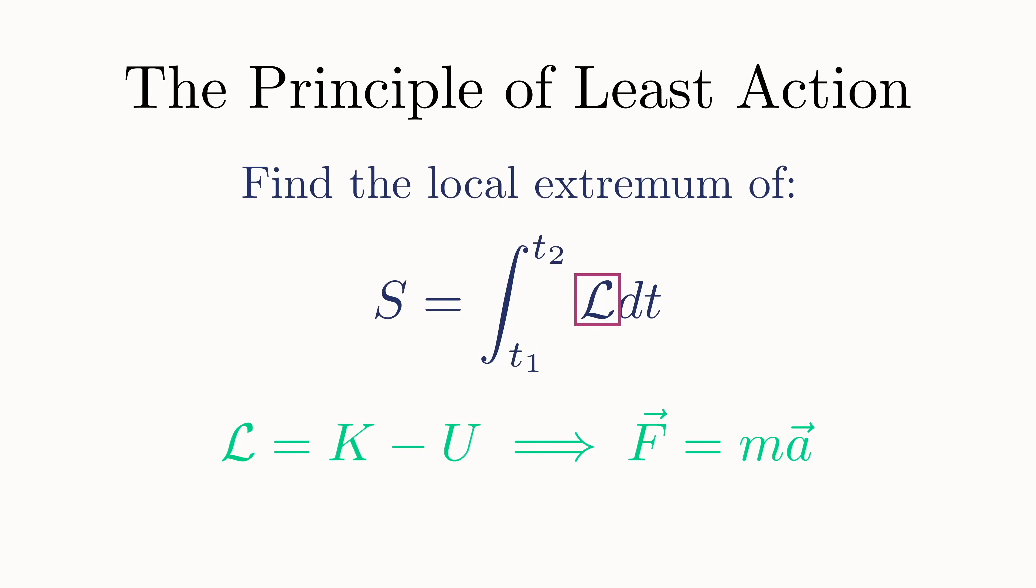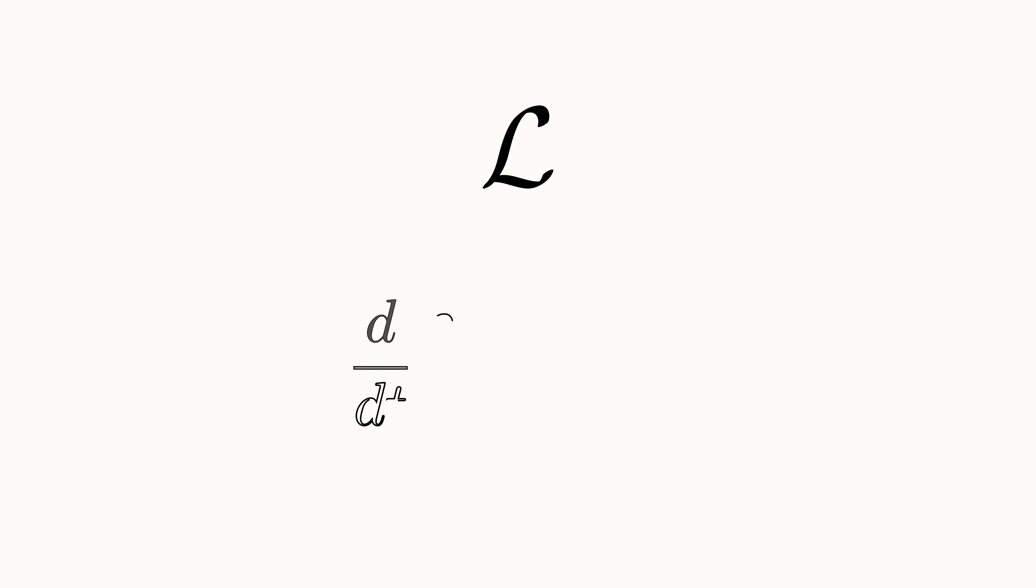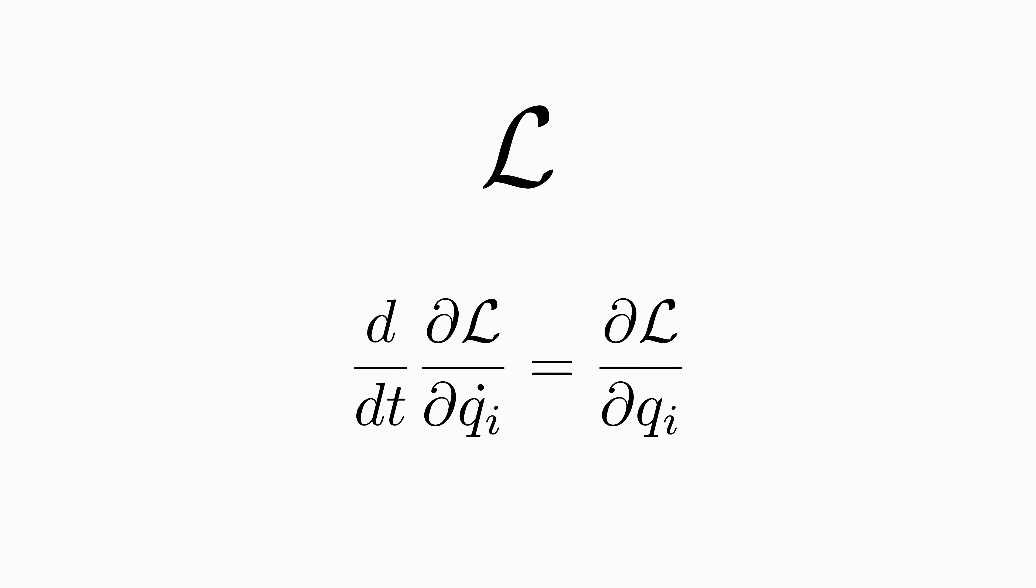It's simply the Lagrangian that works when you try to go from the principle of least action to Newton's equations of motion. And in general, throughout physics, the Lagrangian just is the function that when plugged into the Euler-Lagrange equations results in the correct equations of motion.